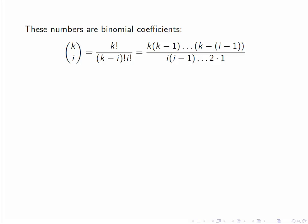These numbers are called binomial coefficients for obvious reasons, but they also give us the number of ways of choosing a set of i objects out of a set of k objects. So we often call this number k choose i. The formula for it is k! divided by (k-i)! times i!.